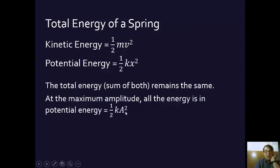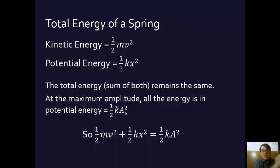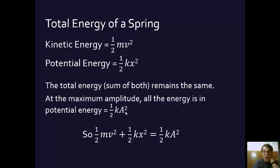So we can say that all the energy of the system is ½kA². That tells us the total energy of the system. At any point in the oscillation, if you take the kinetic energy at that point — ½mv² — and add it to the potential energy at that point — ½kx² — it's going to equal the total energy of the system, which is ½kA².